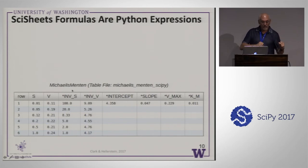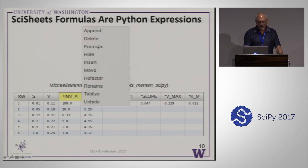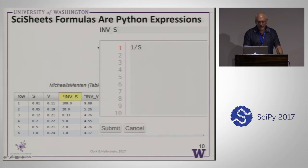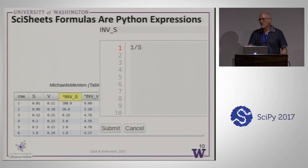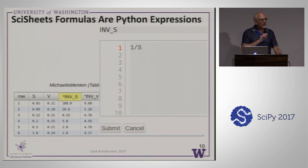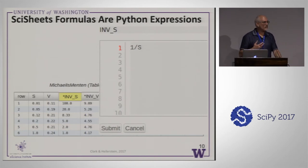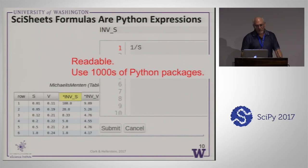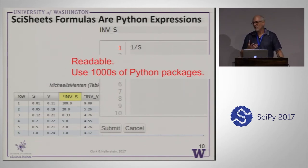For example, for a column converting the inverse of S, you click on it, it highlights yellow, and a popup appears where you can see and edit the formula. The formula looks just like a Python expression where column names are Python variables in the namespace — actually NumPy arrays. This gives you vector operations in a natural way, with all NumPy capabilities available. It's much more readable than grid-like column formulations, and you have all Python packages available to you.